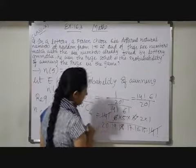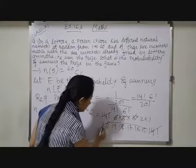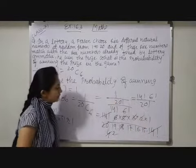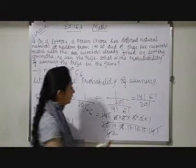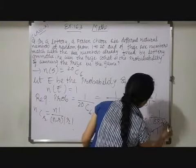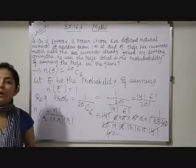6 into 3 is 18. Now 5, 4 is 2, 2 is also there. So multiply all these numbers we will have 1 upon 38,760. So this is the required probability.